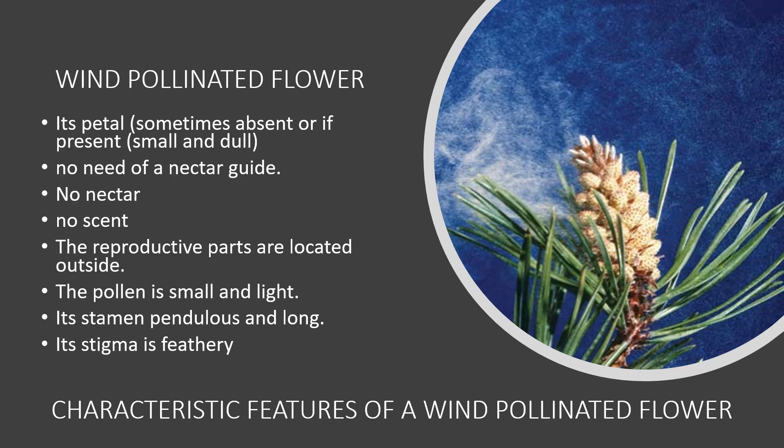The pollen must be small and light. Its stamen must be long and pendulum-like. Its stigma must be feathery in order to catch the pollen. These characteristic features describe a plant that uses wind as its agent of pollination — it is called a wind-pollinated flower.